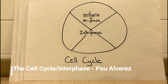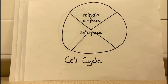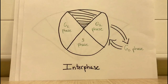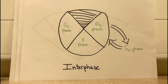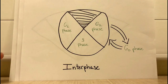The cell cycle is a process which the cell undergoes in order to grow and divide. It is divided into two different phases: the interphase and the mitosis or M phase. The interphase is divided into three different stages: the G1 phase, the S phase, and the G2 phase. During the G1 phase, the cell might go into G0 phase, which is a period in the cell cycle where the cell is neither preparing to divide nor dividing.